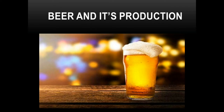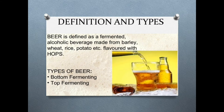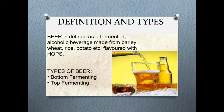So let's get started. Beer is defined as a fermented alcoholic beverage made from barley, wheat, rice, potato, etc., flavored with hops. There are basically two types of beer: bottom fermented and top fermented.